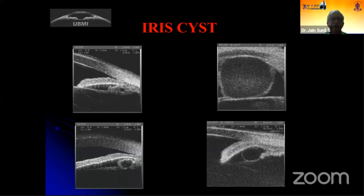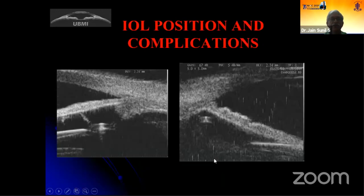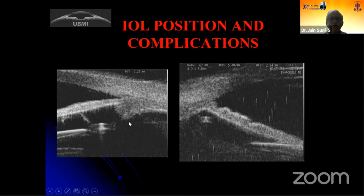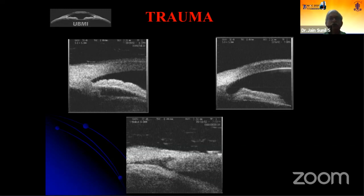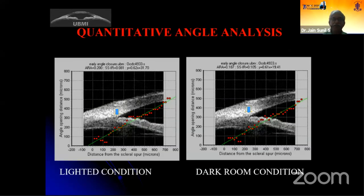An iris cyst might appear as a pupillary block glaucoma, and it is only with imaging technologies that you will be able to see and diagnose it. Malpositioned intraocular lenses causing UGH syndrome — where a haptic is constantly irritating the ciliary body or iris — can be detected only on imaging. Post-trauma, supraciliary effusion or a cyclodialysis cleft cannot be seen by gonioscopy. Quantitative angle analysis for research purposes or the dark room provocation test evaluation is also not possible with gonioscopy alone.